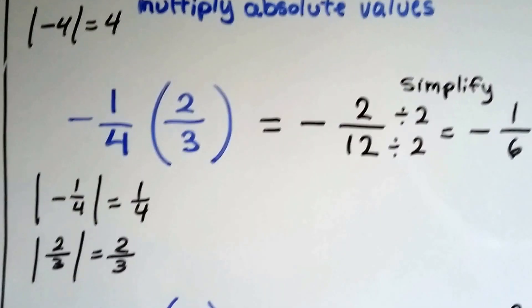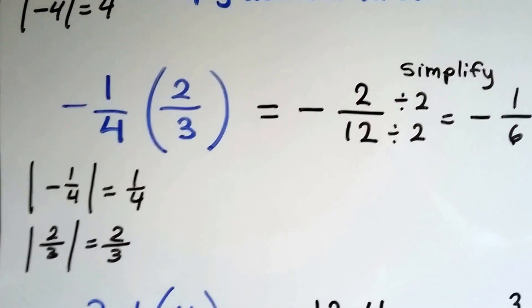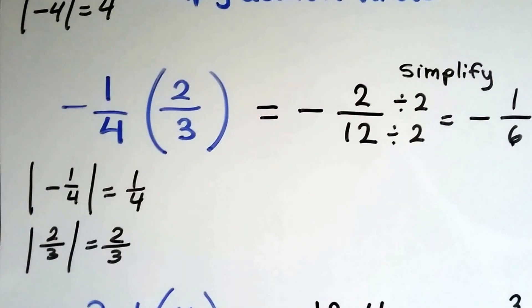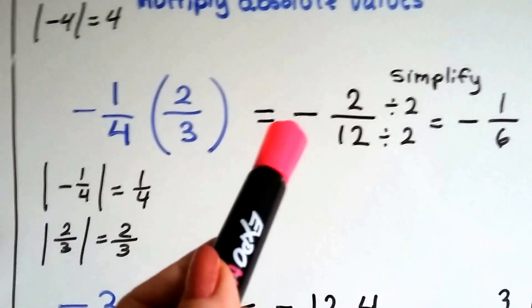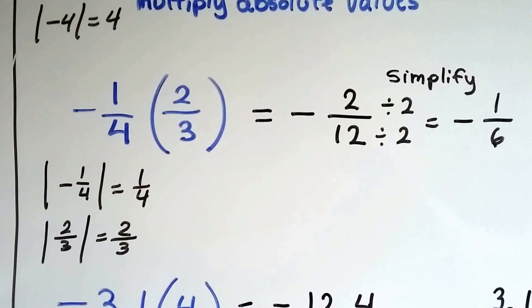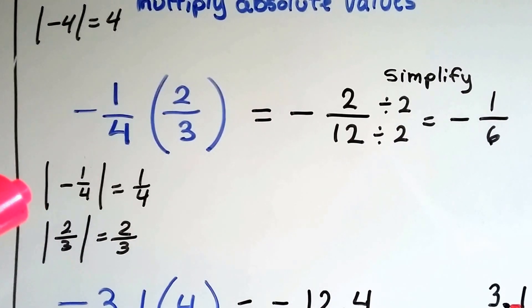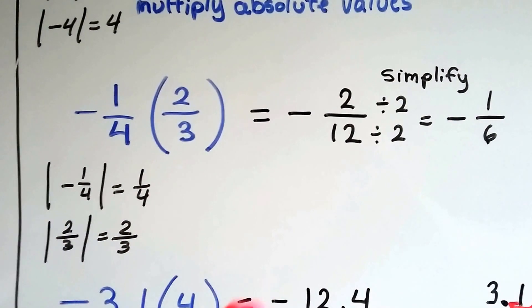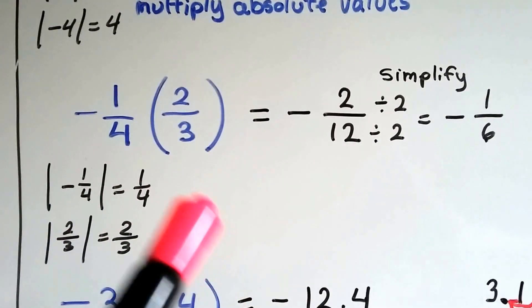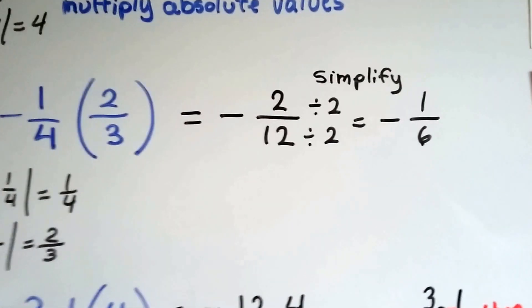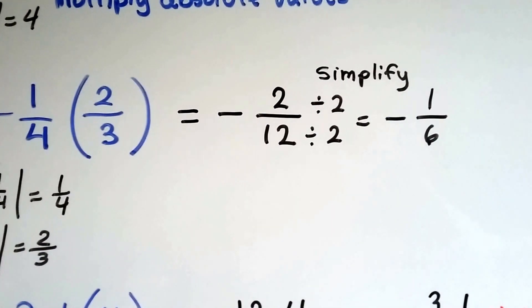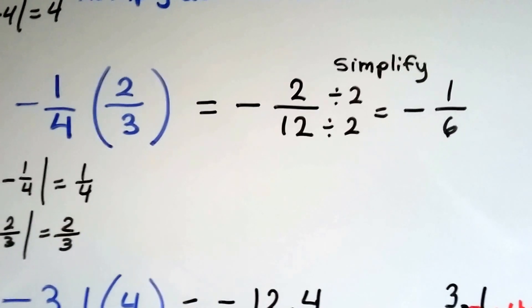Look at this one. We've got a negative 1 fourth times a positive 2 thirds, and they've got unlike signs. So right away we know the answer, the product, is going to be a negative. So we can just automatically put that to get us started. Then we find their absolute value, we multiply them, and we get 2 twelfths. 2 times 2 is 2. 4 times 3 is 12. We can simplify this by dividing the numerator and the denominator by 2, and we get negative 1 sixth.